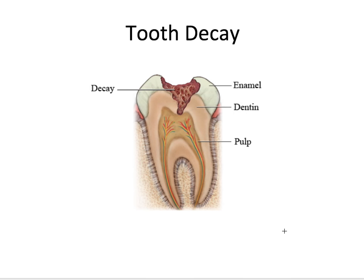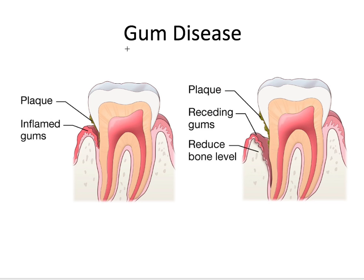Now let's talk about disease processes that can happen to teeth. Tooth decay refers to the loss of mineral structure due to bacteria and bacterial products. This is usually caused by plaque, which is a collection of bacteria on the tooth surface. Our second disease process involving teeth is called gum disease, which also involves plaque — the collection of bacteria on the tooth surface.